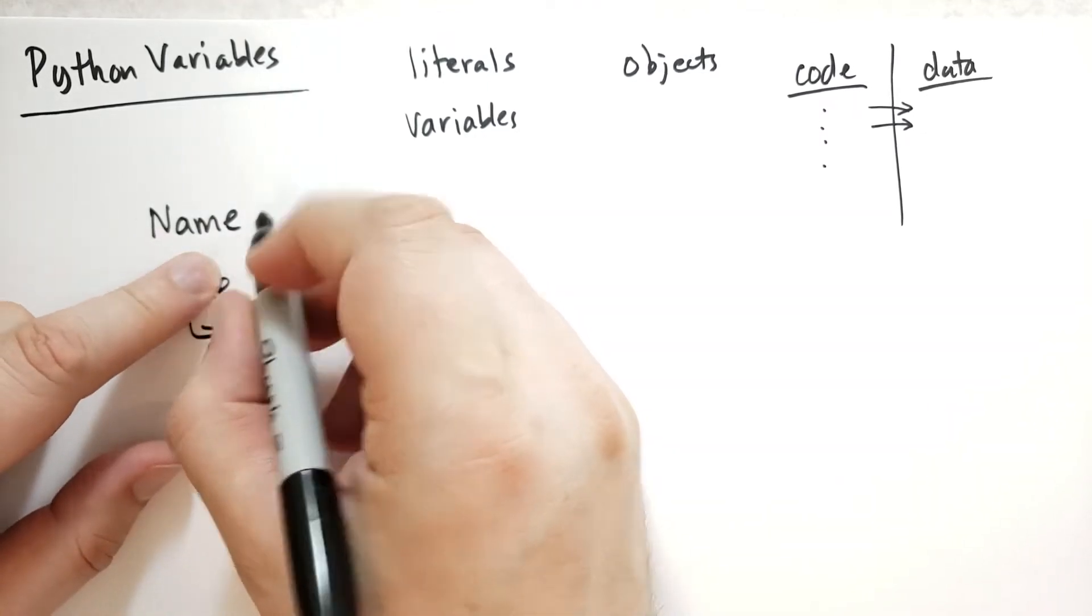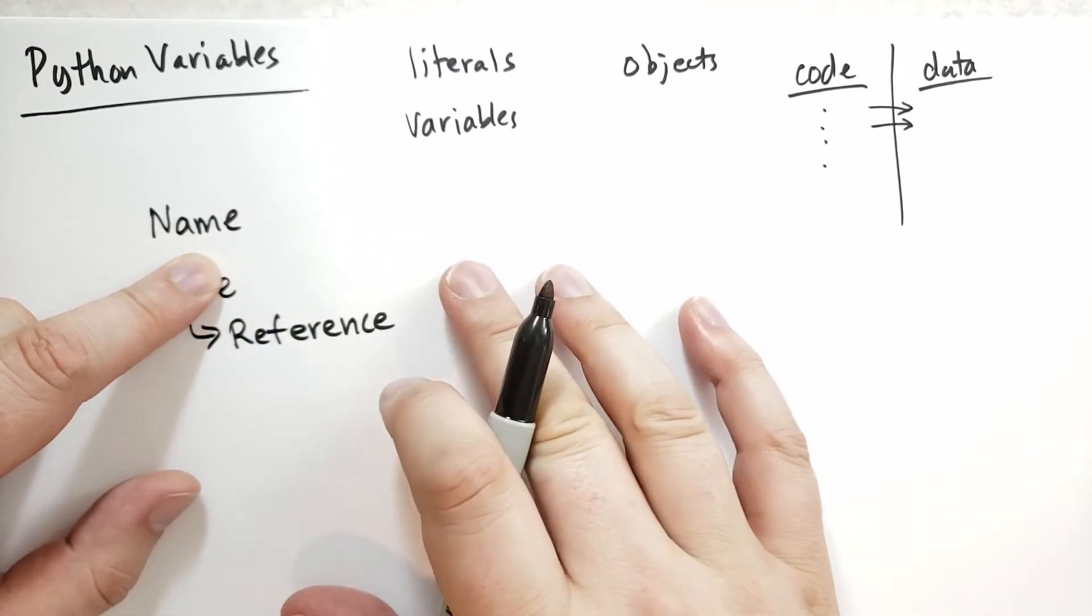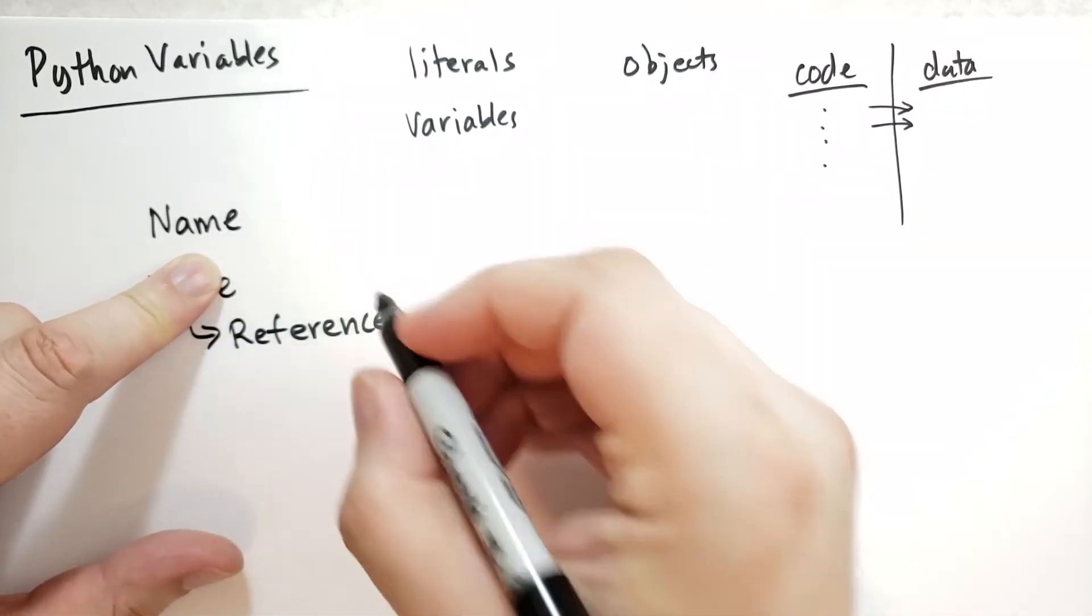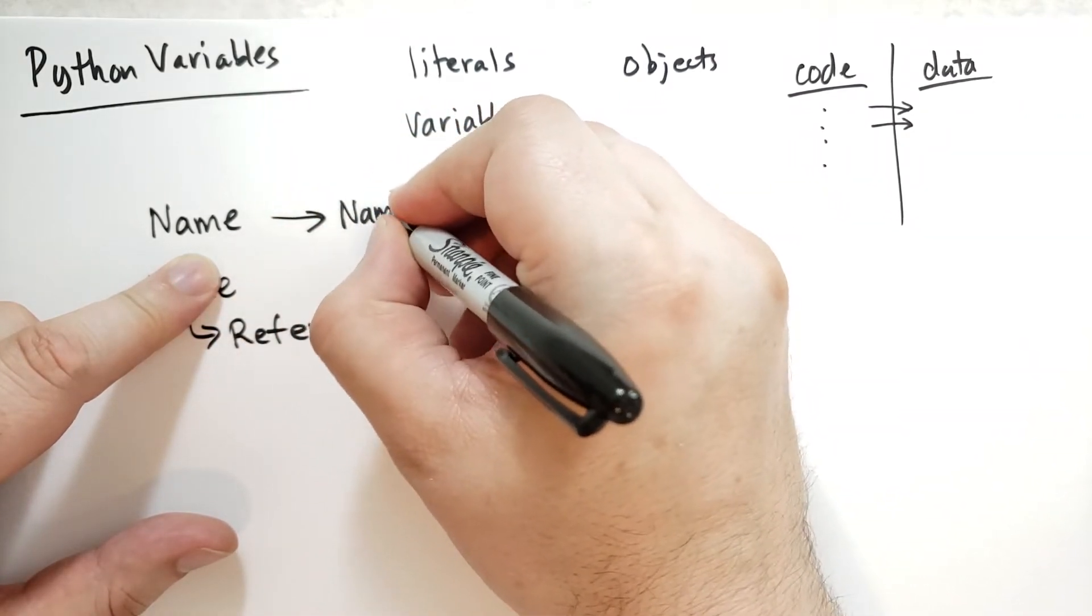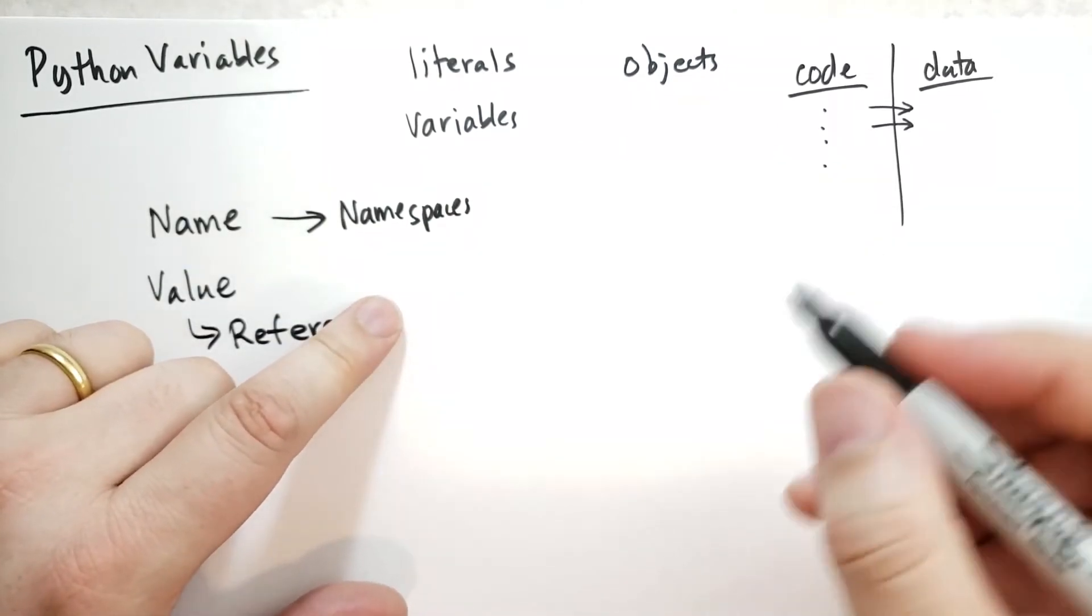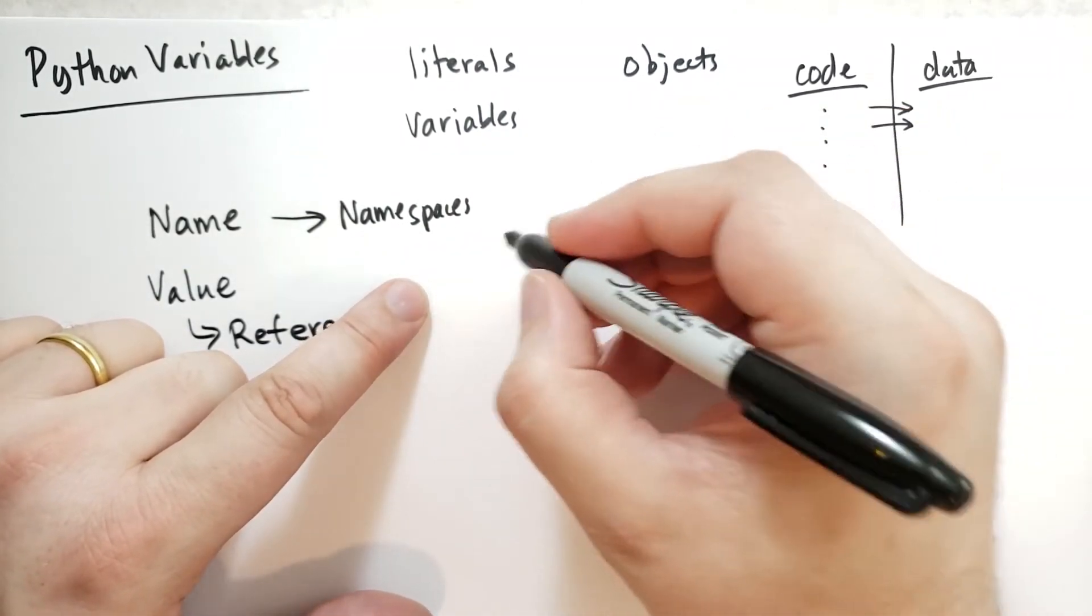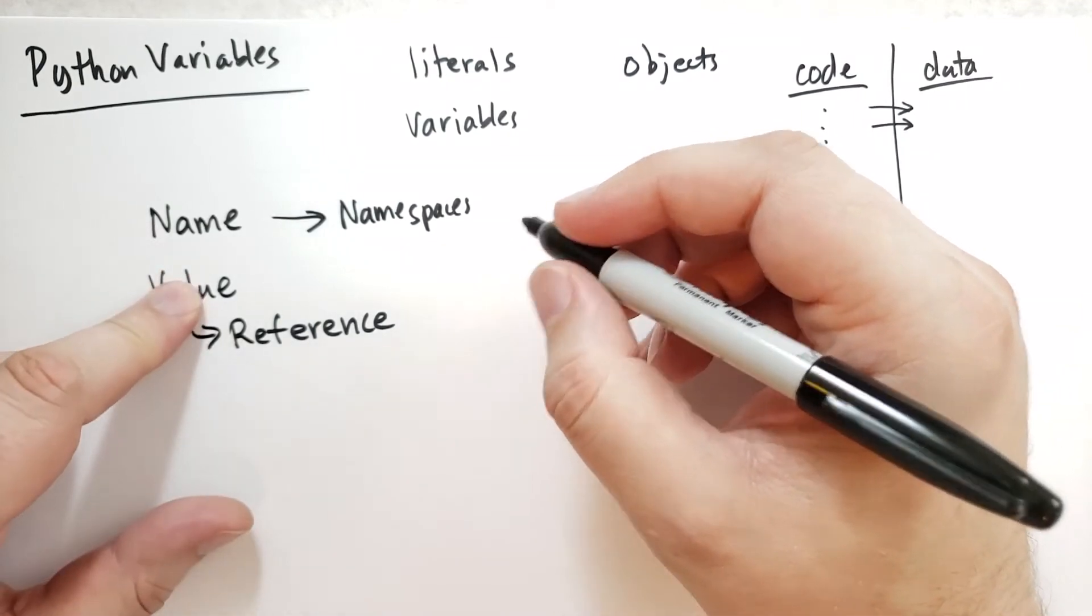When we're talking about names, though, we run into a problem because sometimes the same name can be used in different parts of the program. And so we have a naming conflict. And so Python organizes things into what's called namespaces. And we can also call these scopes.